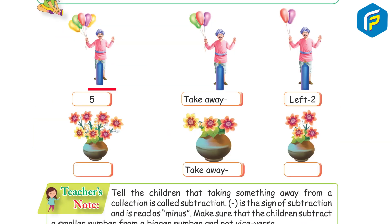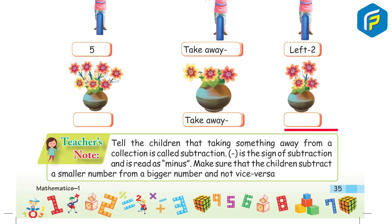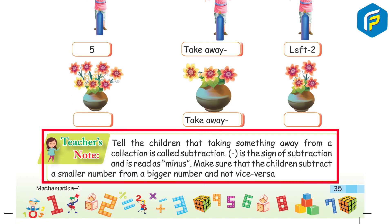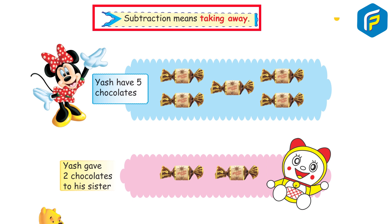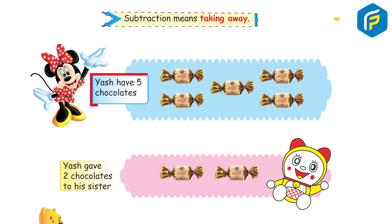Warm up: Count and write. 5 take away 2 leaves how many? Teacher's note: Tell the children that taking something away from a collection is called subtraction. Minus is the sign of subtraction and is read as 'minus'. Make sure that the children subtract a smaller number from a bigger number and not vice versa.